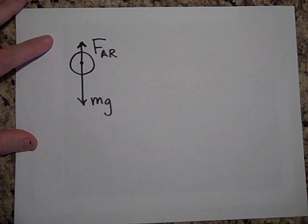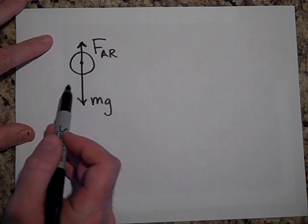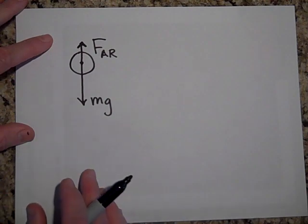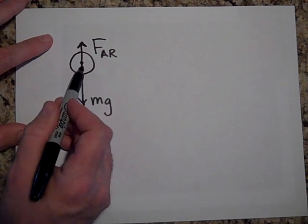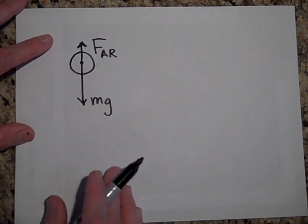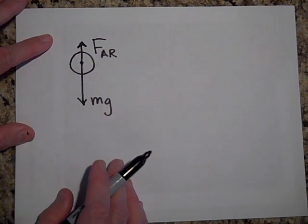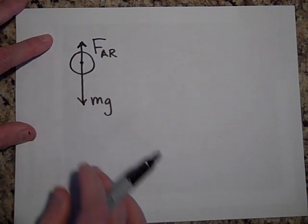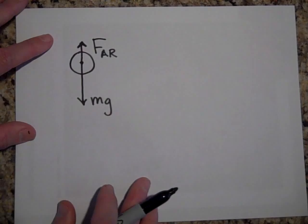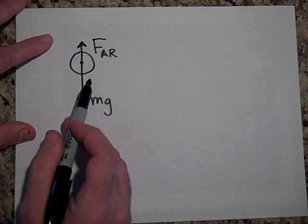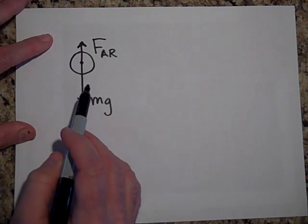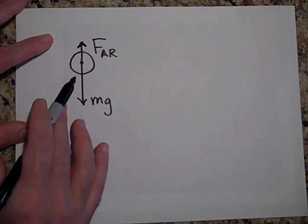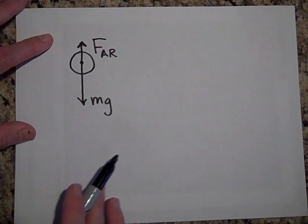How much force you get from air resistance has to do with how thick the fluid is that it's going through, the air itself. It also depends on the shape of this object. If it's more streamlined you'll get less air resistance. And it also depends on how fast this is going. The faster you go, the more particles you interact with per second, and the harder you hit the particles. So you get this air resistance force that depends on velocity.